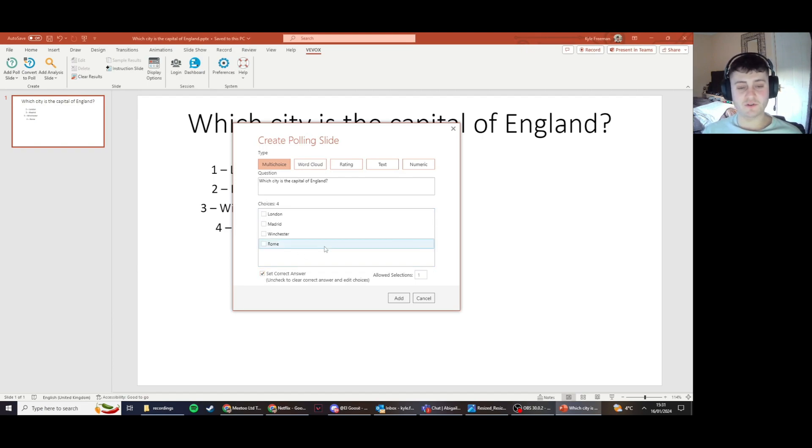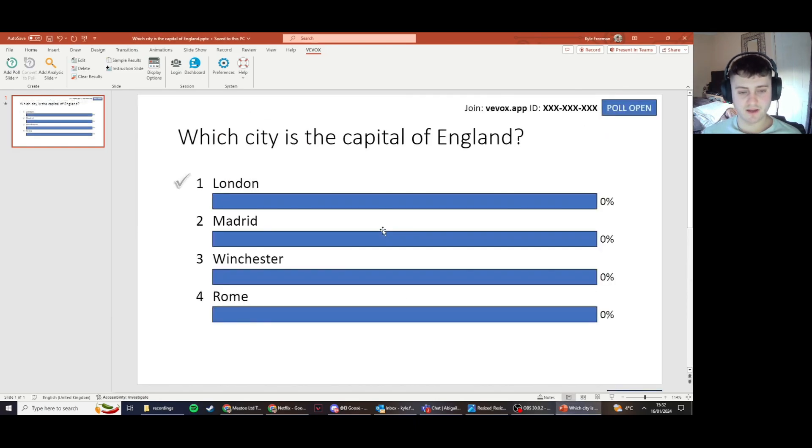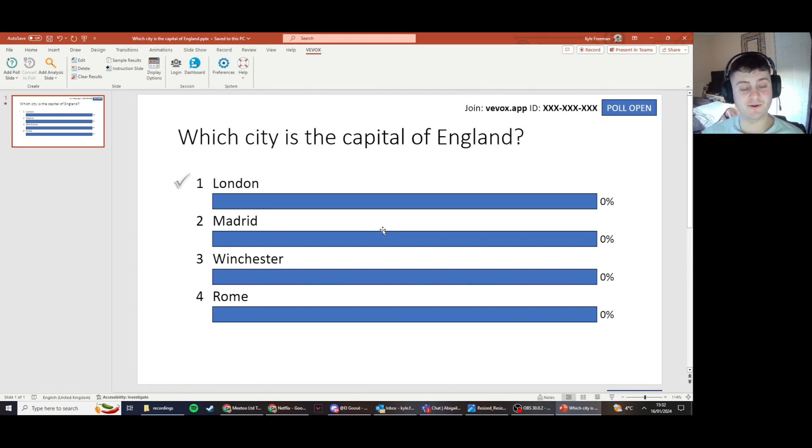It is also important to make sure that you select your correct answer, as this will not be pulled over from any previous software that you may have used. So I'm going to click select answer here, and then click London, and then just click add down here. And as you can see, it's been converted to a Vevox polling slide.